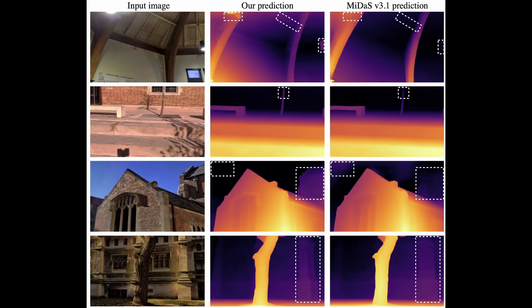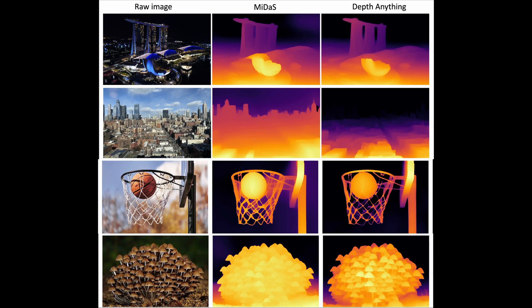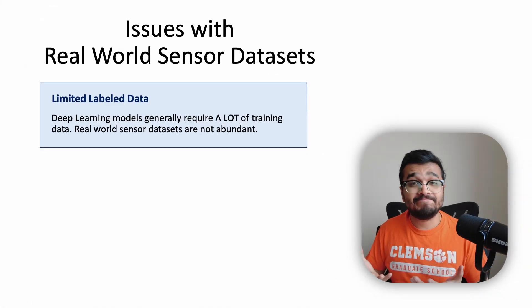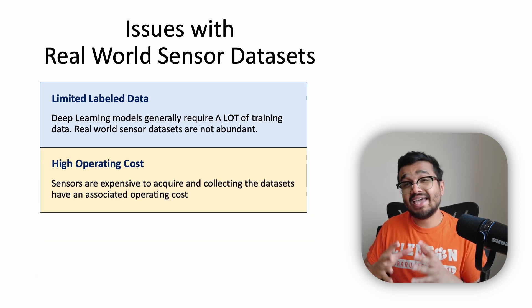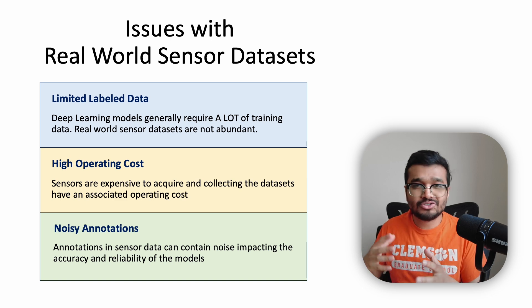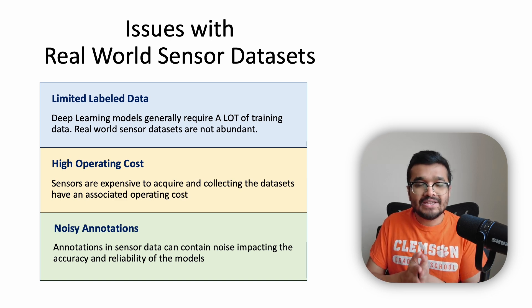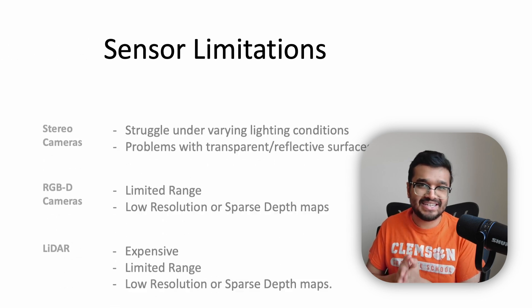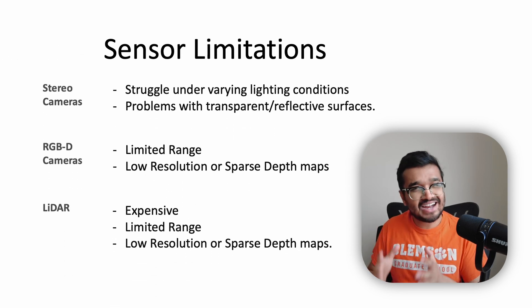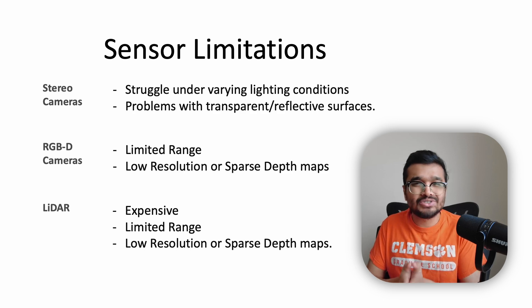Here are some incredible results from the Depth Anything V1 model. As impressive as those results are, it struggles with transparent objects and capturing fine-level details. The authors of Depth Anything V2 suggest that the biggest bottleneck for model performance is not the architecture itself, but the quality of the training data. Most labeled datasets captured with sensors can be quite noisy, ignoring fine-grained details, generating low-resolution depth maps, and struggling with lighting conditions and reflective or transparent objects. Depth Anything V2 therefore proposes to discard all real-world labeled datasets from sensors like stereo cameras, RGB cameras, or LiDAR, and instead only use synthetic datasets.